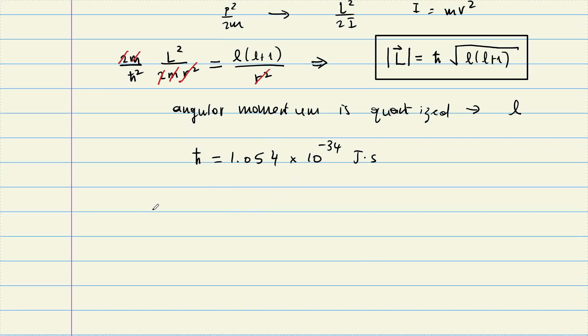From the solvability constraint, L can be 0, 1, 2, 3, and so on. These angular momentum numbers correspond to spectral lines known before quantum mechanics, and they adopted those names. L=0 is called S (for sharp), L=1 is P (for principal), L=2 is D (diffuse), L=3 is F (fundamental), then G, H, and so on.